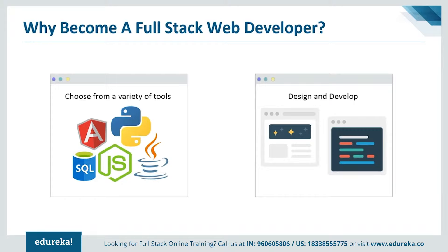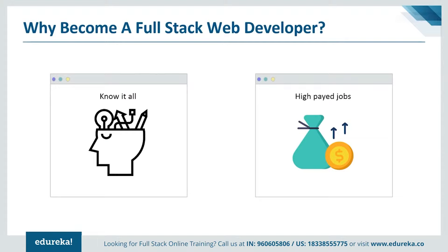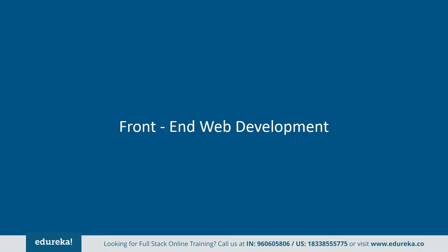A fullstack developer is a creative person who can both develop and design an application. After mastering various scripting and programming languages and working alongside frameworks and libraries, a fullstack developer is no less than a master. A fullstack developer is highly valued all around the world — in the US, the average salary of a fullstack developer is over $110,000.